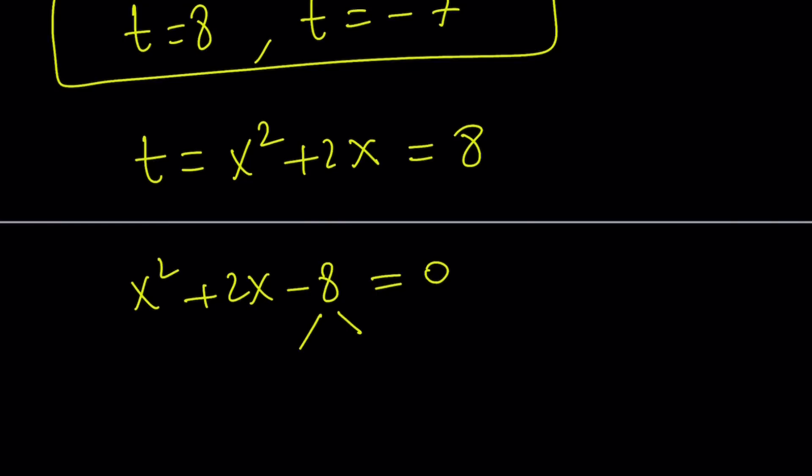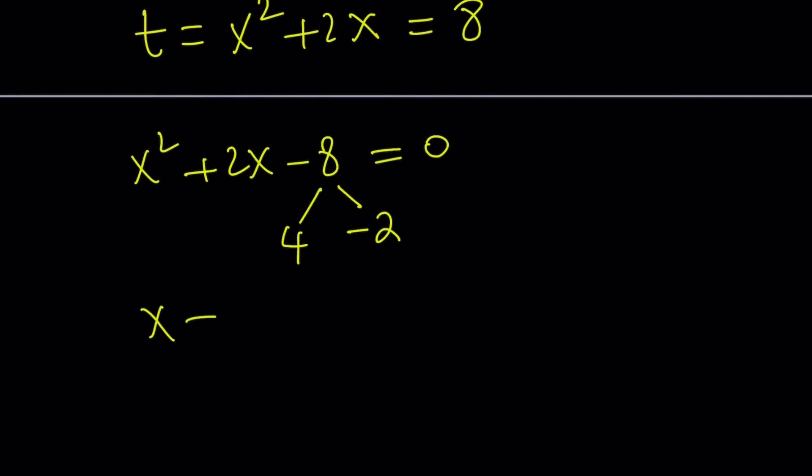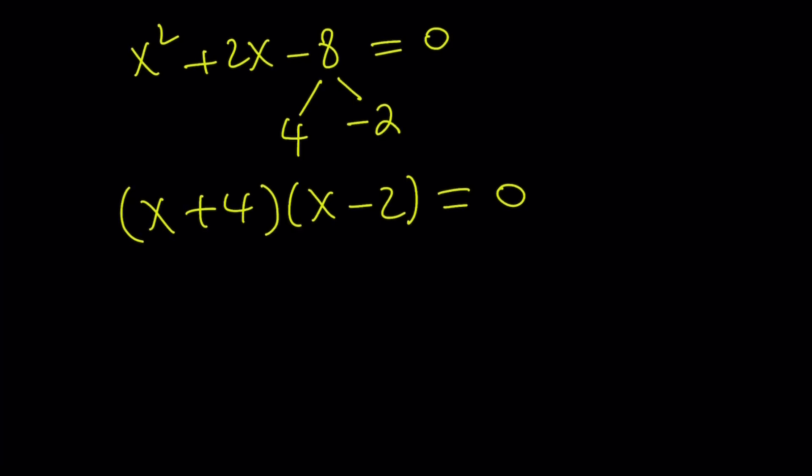Find two numbers whose product is -8 and whose sum is positive 2. Those numbers are 4 and -2. Those are factors, so I can write it as (x + 4)(x - 2) = 0. And from here, I get x = -4 and x = 2. So, two solutions from here.